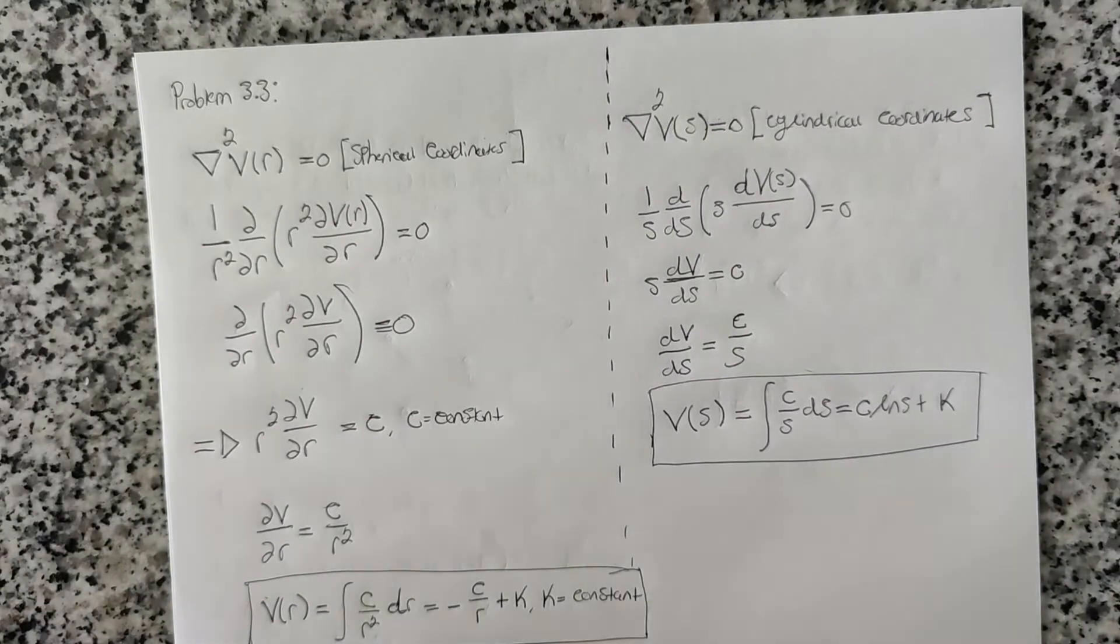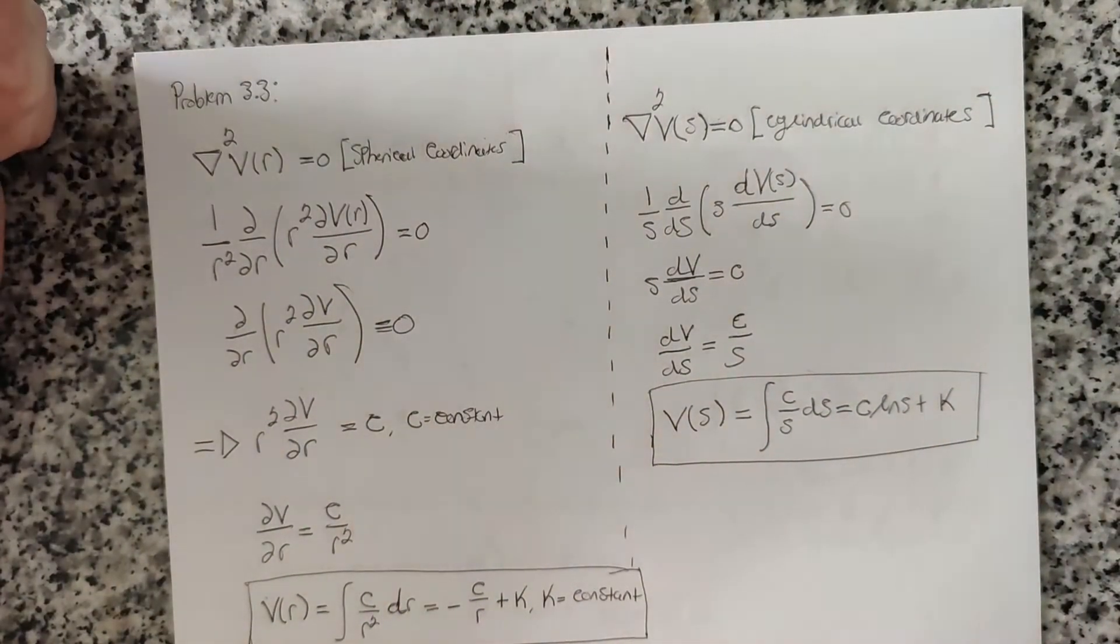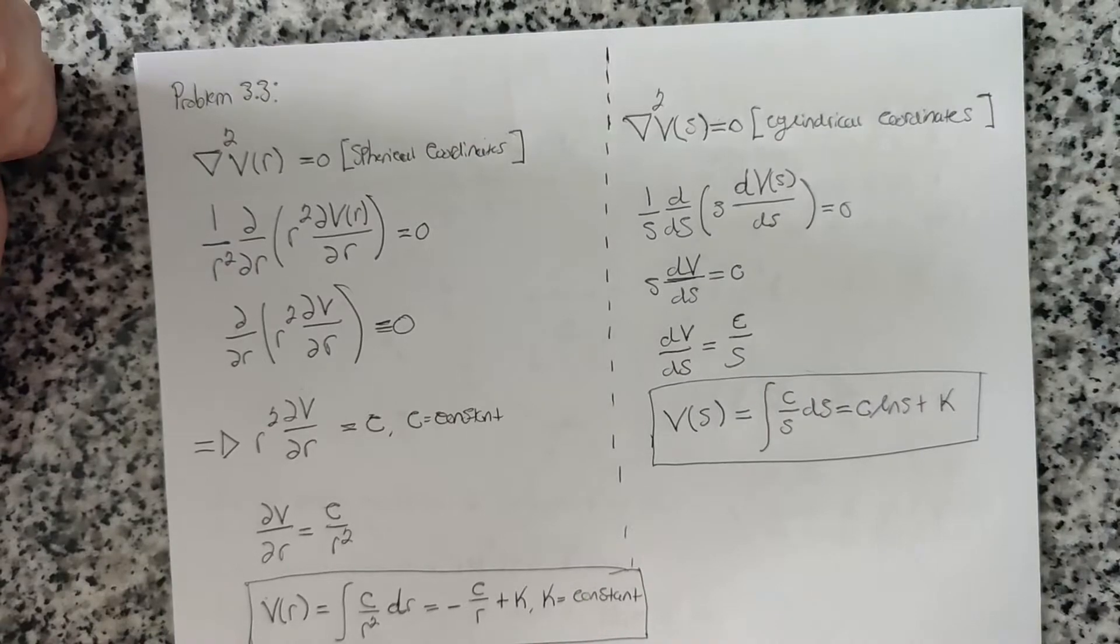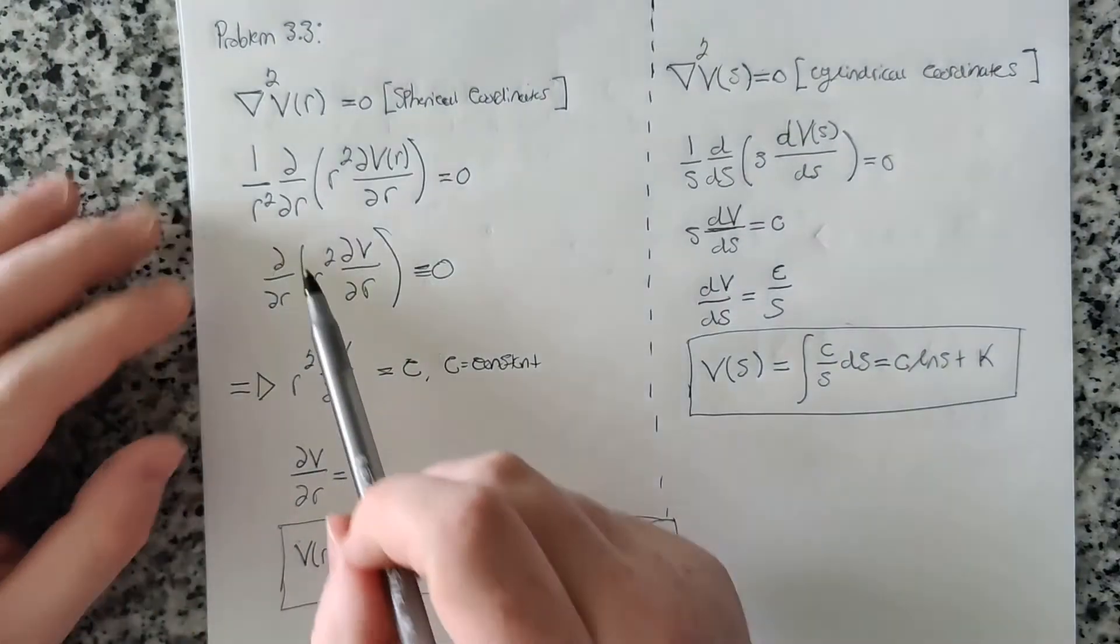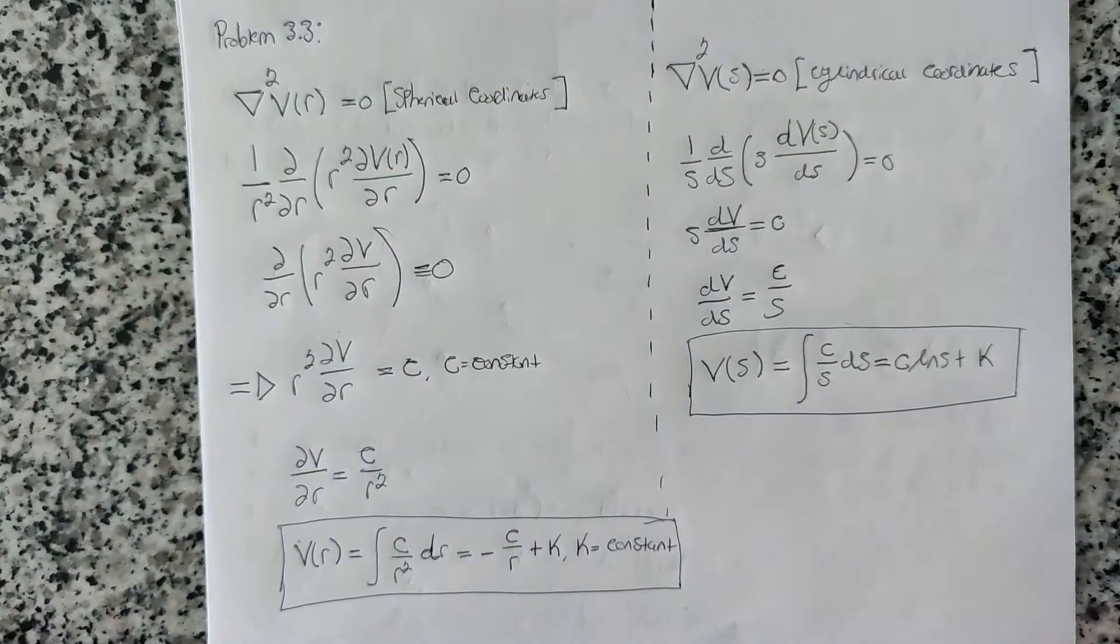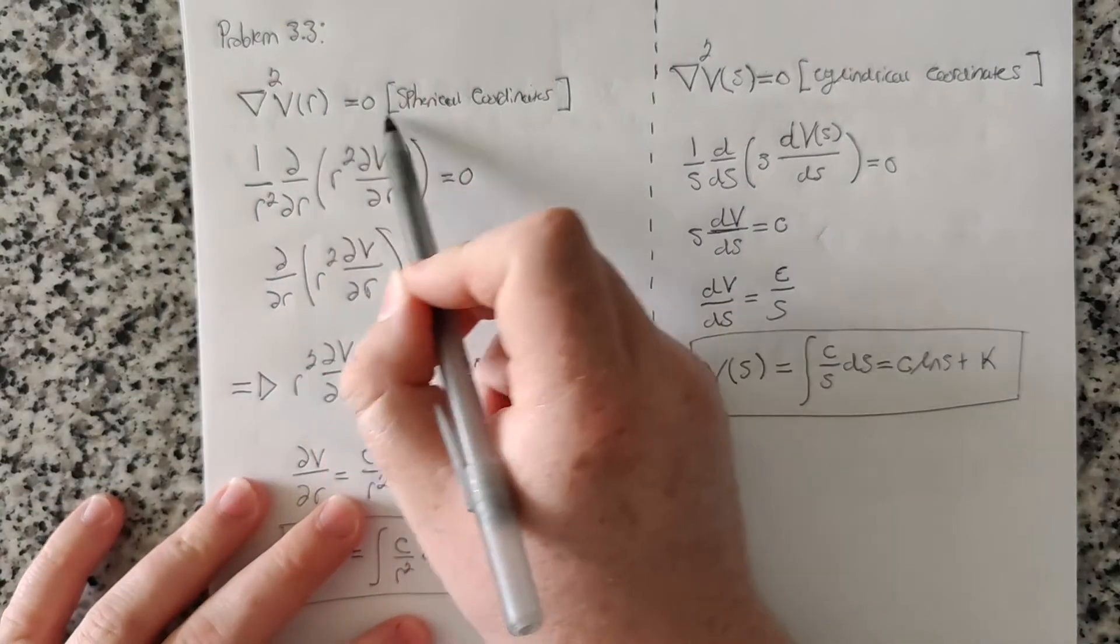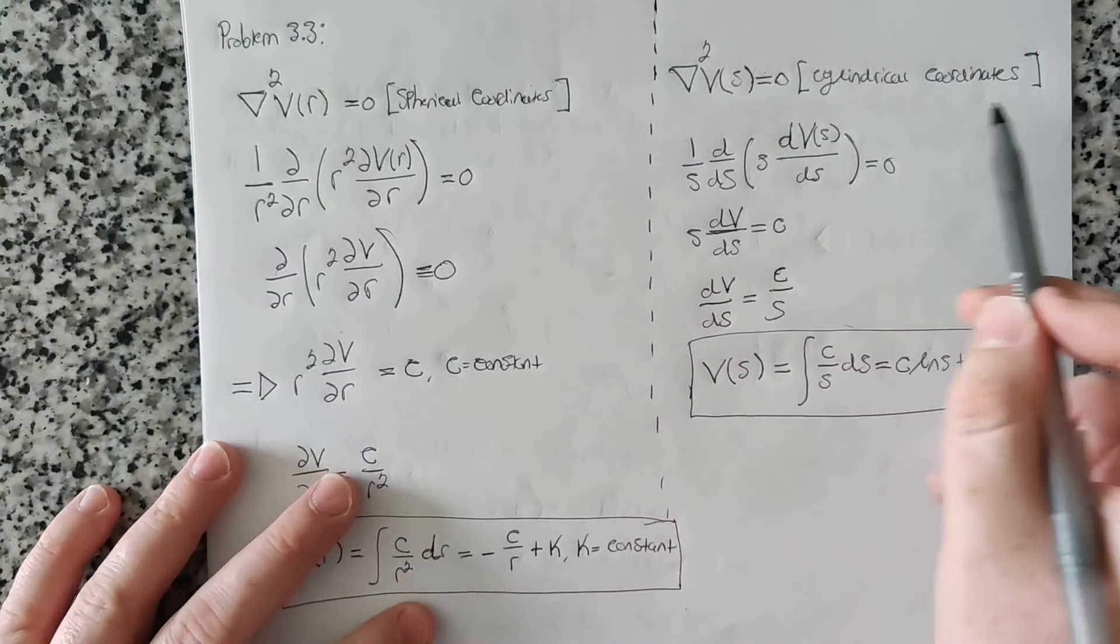So it says that we want to find a general solution to Laplace's equation in spherical coordinates, in the case where V only depends on R, and also in cylindrical coordinates where the potential only depends on S. So basically, it just wants us to find the general solution to Laplace's equation in one dimension, in the case of the potentials in spherical coordinates and in cylindrical coordinates.